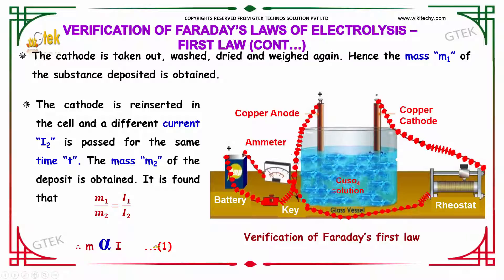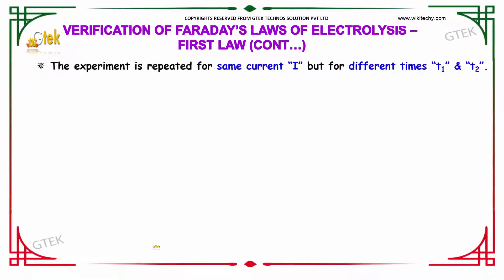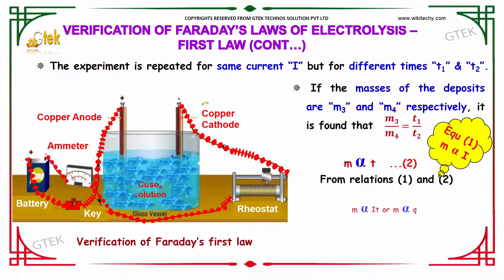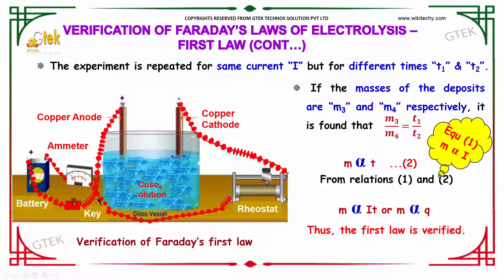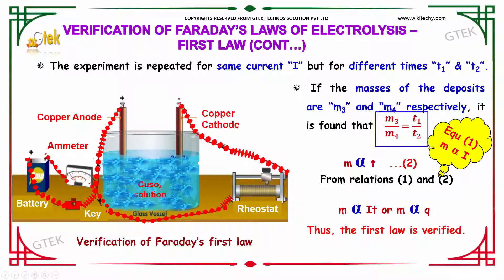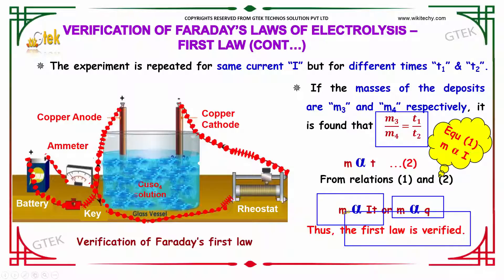This is the verification of Faraday's first law. The experiment is repeated for the same current I but for different time intervals t1 and t2. If the masses of the deposits are M3 and M4 respectively, it is found that M3 divided by M4 is equal to t1 divided by t2. From these relations, mass is directly proportional to I×t, or mass is directly proportional to the charge. This is how the first law is verified.